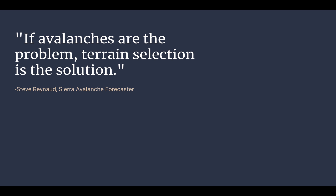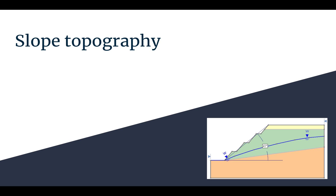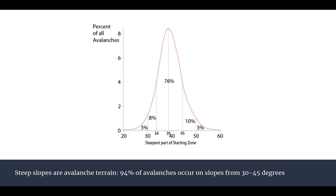This is a quote from Steve Renaud, a Sierra avalanche forecaster: 'If avalanches are the problem, then terrain selection is the solution.' Now I'm going to talk about slope topography — basically what the slope looks like, the shape of the slope, and how that contributes to avalanche risk.